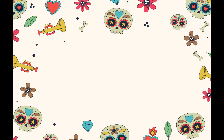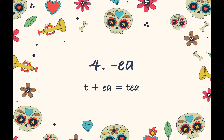And fourth, we have ee. T, ee — you get tee. And ss, ee — we get see.